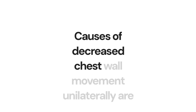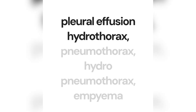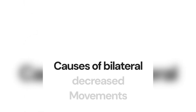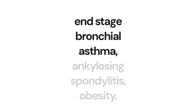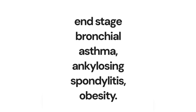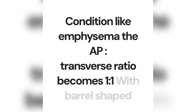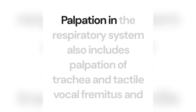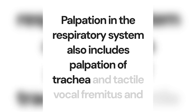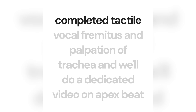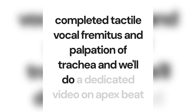Causes of decreased chest wall movement unilaterally are pleural effusion, hydrothorax, pneumothorax, hydropneumothorax, empyema, consolidation, fibrosis, and collapse. Causes of bilaterally decreased chest wall movement include end-stage bronchial asthma, ankylosing spondylitis, and obesity. The AP to transverse ratio is normally 5:7. In hyperinflated lung conditions like emphysema, the ratio becomes 1:1 with a barrel-shaped chest. Palpation in respiratory examination also includes palpation of trachea and tactile vocal fremitus, which have already been covered, with a dedicated video on apex beat to follow.